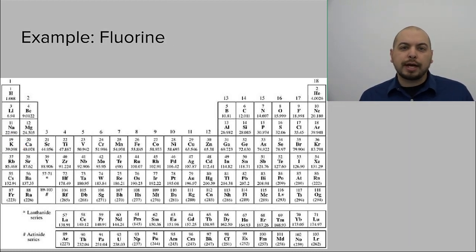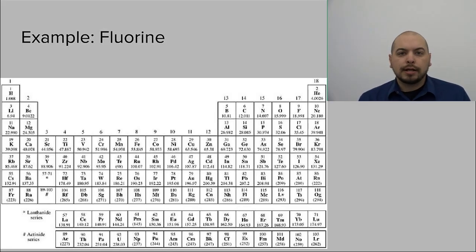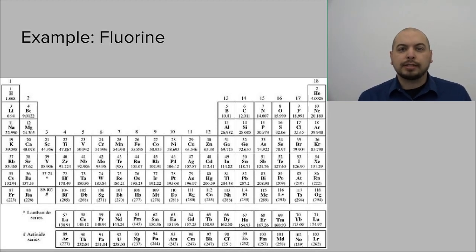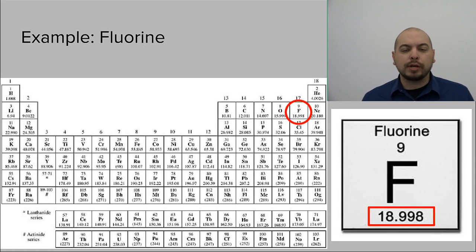Now I want you to find the atomic mass of a fluorine atom. Take a second, look at your periodic table, and pause the video if you need to. Fluorine on the periodic table is represented by the letter F. It's atomic number 9, which tells you that it has 9 protons. And if you look at the atomic mass, the mass of fluorine is 18.998 amu. This means on average, a fluorine atom is going to have a mass of 18.998 amu.